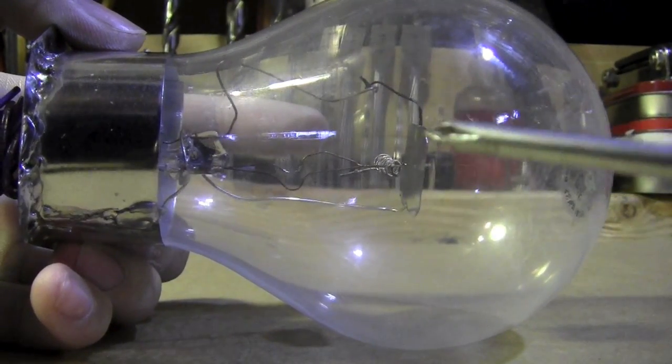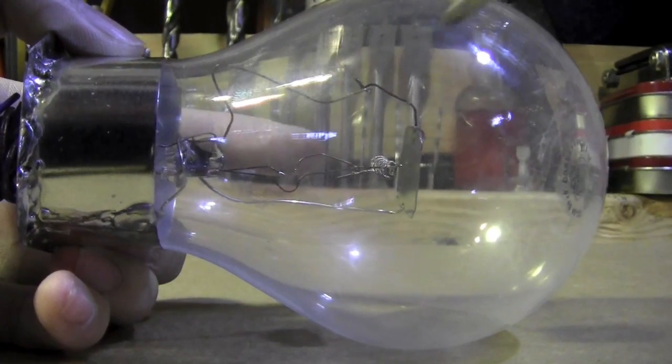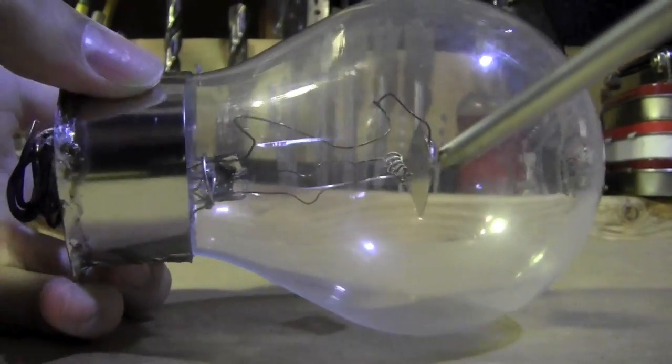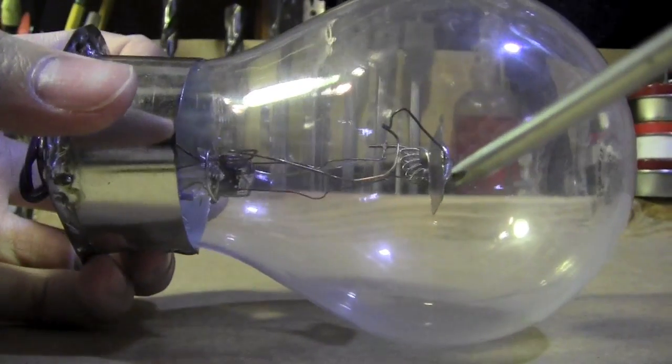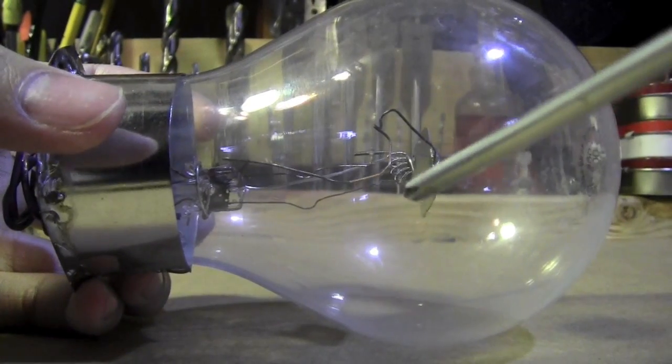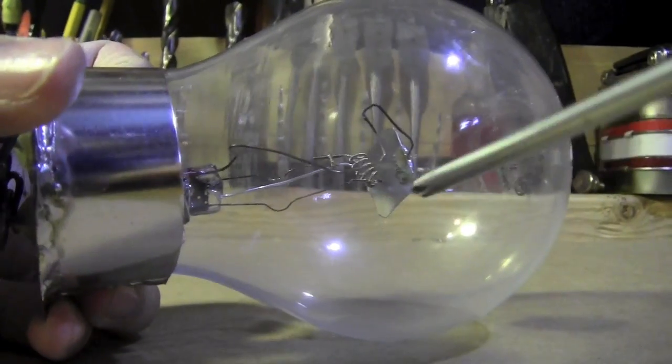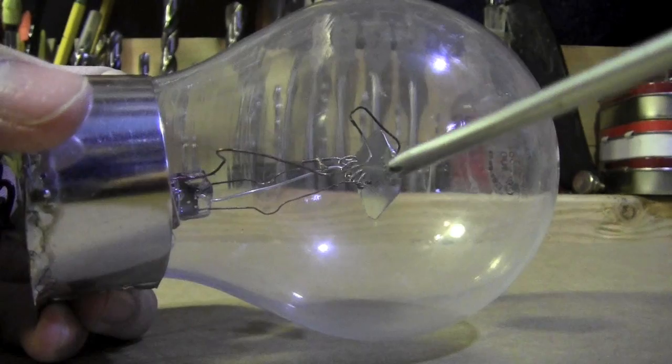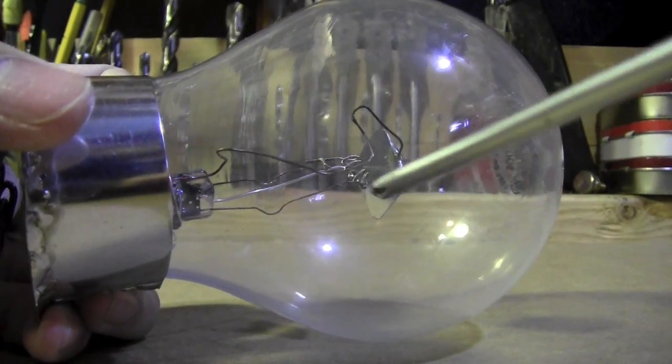What's supposed to happen is this is a tungsten filament from an overhead light bulb, and it'll get hot and the electrons will pass to the metal plate. I don't know if it needs to be a certain type of metal. I just use tin because that's what I had and it was solderable.